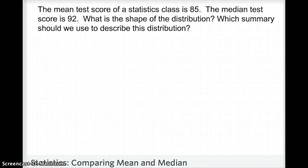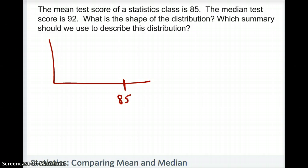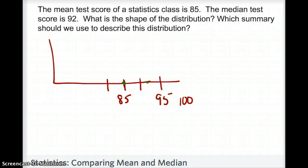So why is it important to know the mean goes closer to the tail? Let's look at a problem. The mean test score of a statistics class is 85 and the median test score is 92. You could be asked: what is the shape of the distribution, and which summary statistic should we use to describe it? With a mean of 85 and a median of 92, these two numbers are not close to each other, so we do not have a symmetrical distribution — we have some sort of skewed distribution.